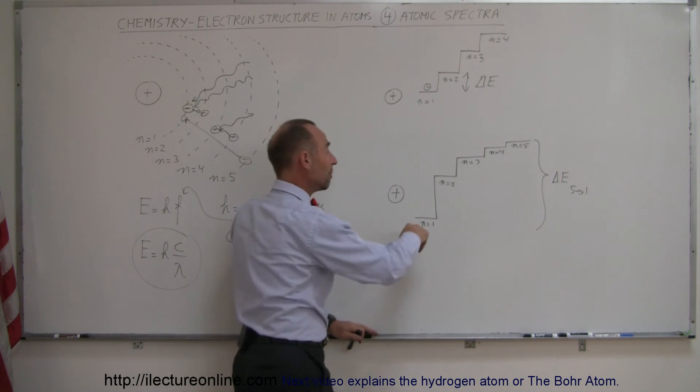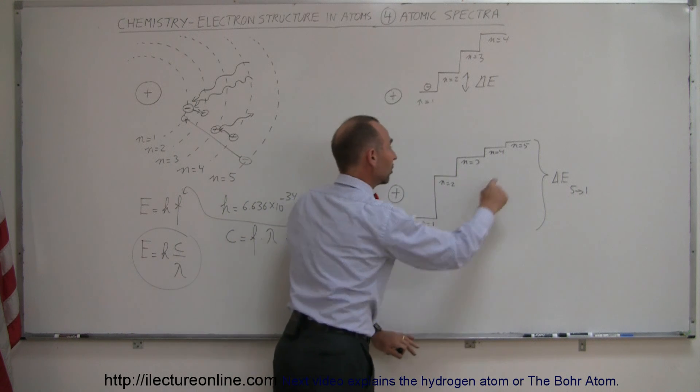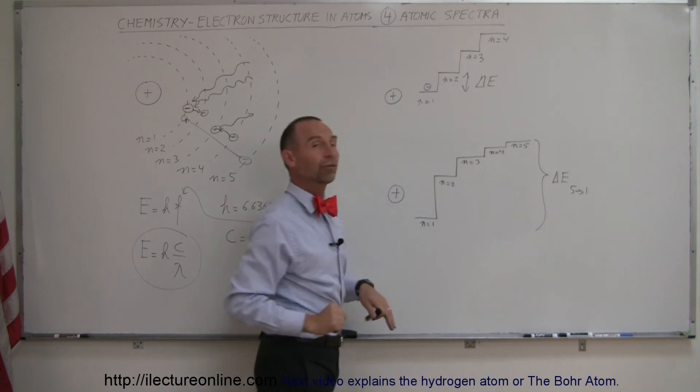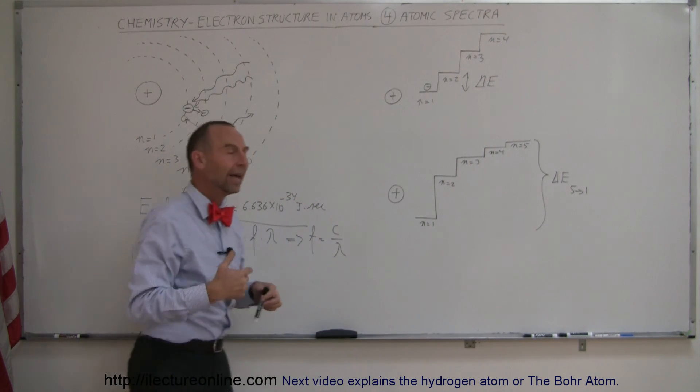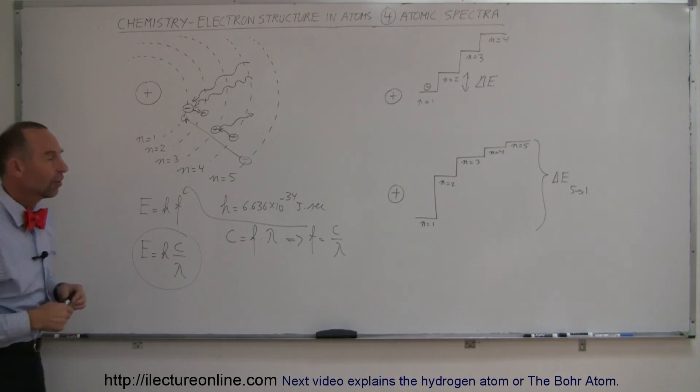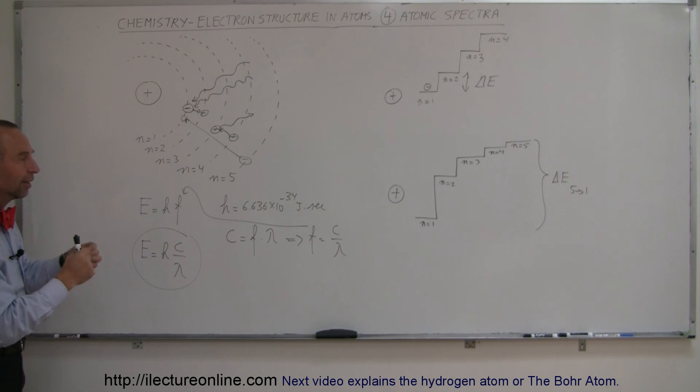What energy does it need to jump back up? Well, if it goes from N equals 1 to N equals 5, it will need this much energy in the photon. If it goes from N equals 1 to N equals 3, it will need that much energy and so forth. And that's how photons and electrons interplay when they move around the nucleus of atoms. And that's how it goes.